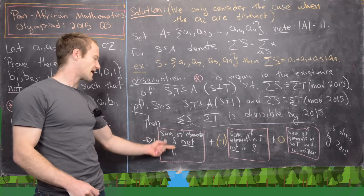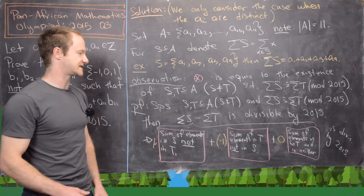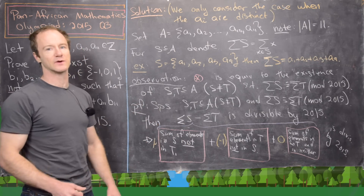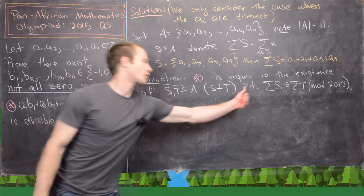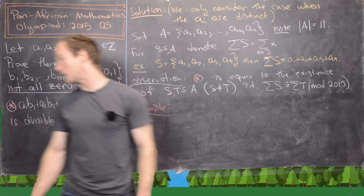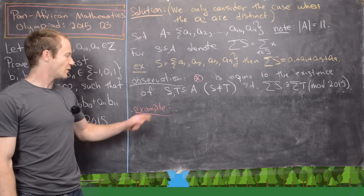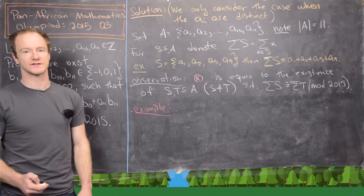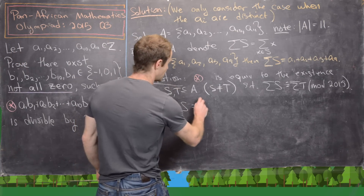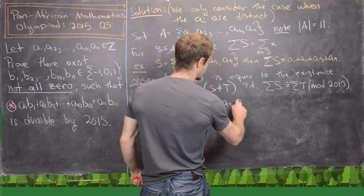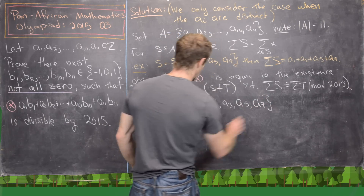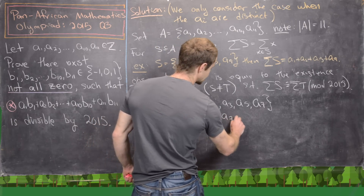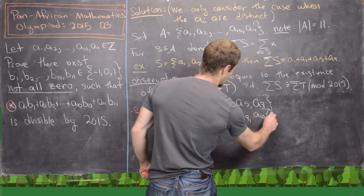Now let's look at a quick example of this setup to get a feel for what's happening. Suppose S equals {A1, A3, A5, A7} and T equals {A3, A7, A9, A10}, and these are two subsets satisfying the condition that σ(S) is congruent to σ(T) modulo 2015.